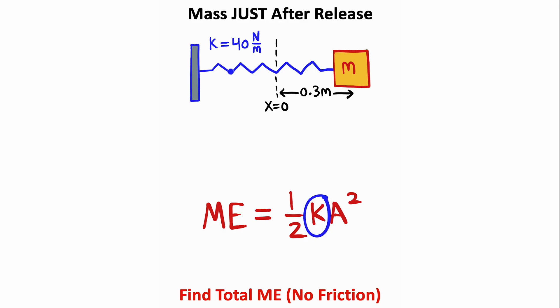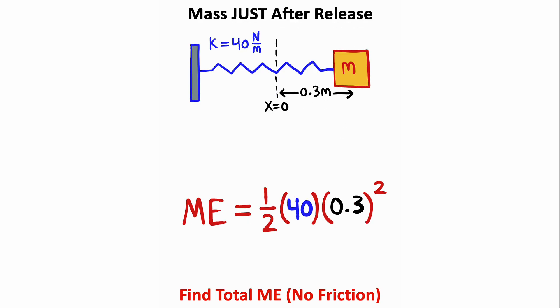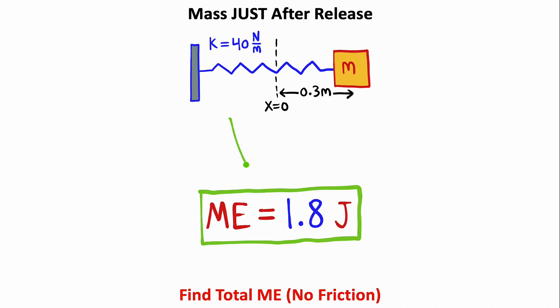Now the spring constant is given to us as 40 Newtons per meter. And the amplitude refers to the maximum displacement past the resting equilibrium point. Since we're looking at the spring just after it was released, 0.3 meters is going to be the amplitude. So we have one-half times 40 times 0.3 squared, which on a calculator is equal to 1.8. So the total mechanical energy is 1.8 joules.